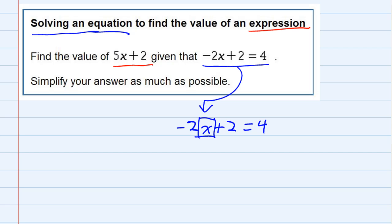So I'm going to first move that plus 2 over to the other side by subtracting 2, and of course I need to do that to both sides since they're equal. The plus 2 and the minus 2 will cancel, leaving me with just the minus 2x. On the right-hand side I have 4 minus 2, which is 2.